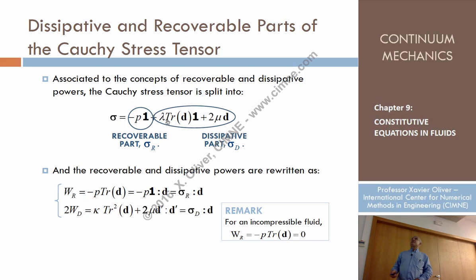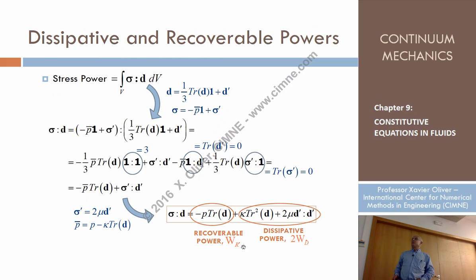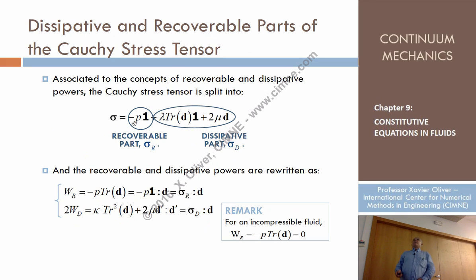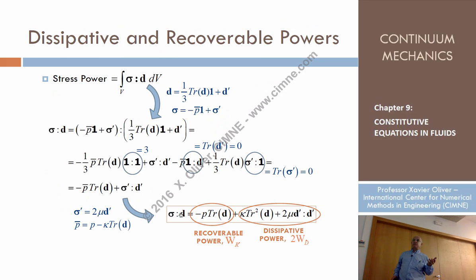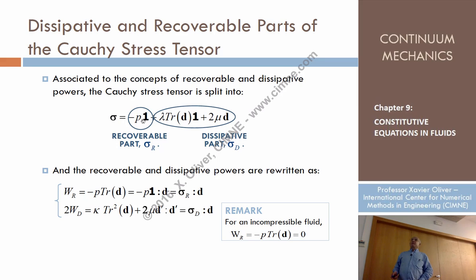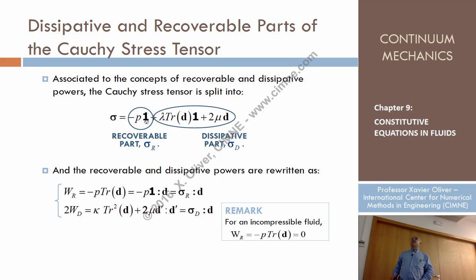The multiplication of all the remaining terms times D produces what we call the dissipative power. By extension we say the stresses have two parts: when multiplied by the rate of strains, the first part produces recoverable power, and the second part produces non-recoverable, dissipative power. That is why we call these the recoverable and dissipative parts of the stress.